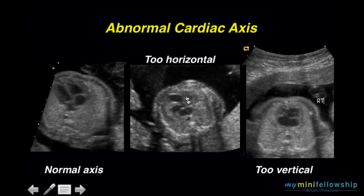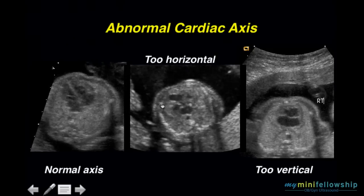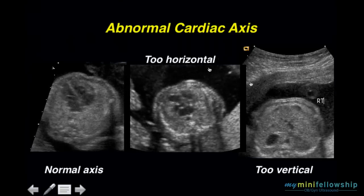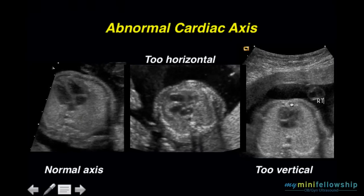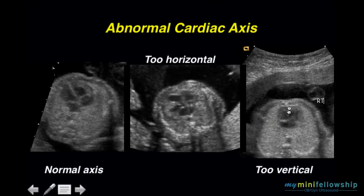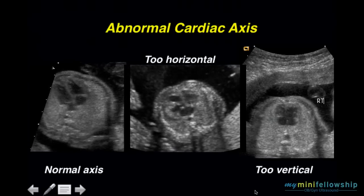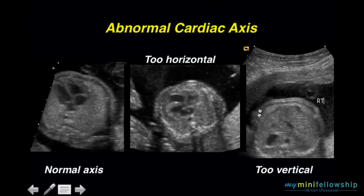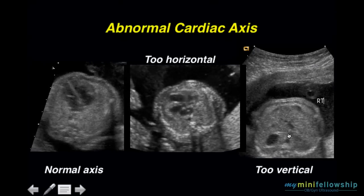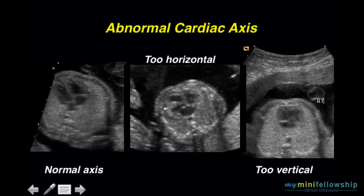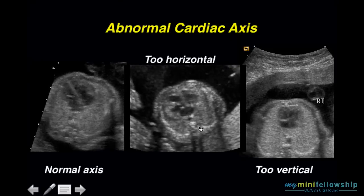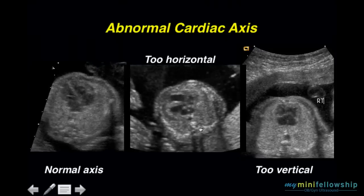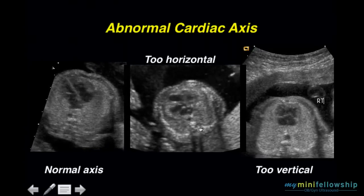Here, we draw our midsagittal plane and a line through the interventricular septum, and clearly the heart is too horizontal. Here, we draw our midsagittal plane and a line through the interventricular septum, and clearly the heart is too vertical. This fetus has a congenital structural defect of the heart. This fetus has an acquired cardiac abnormality.